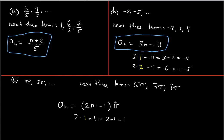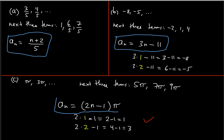Checking: two times one minus one equals one, giving one times pi — correct. Two times two minus one equals three, giving three pi — precisely the second term. So the nth term formula is (2n − 1)π. This confirms the pattern works, so the nth term formula for this arithmetic sequence is (2n − 1)π. I hope this was useful — thanks for watching, see you in the next video.